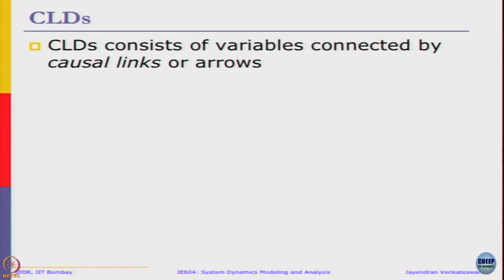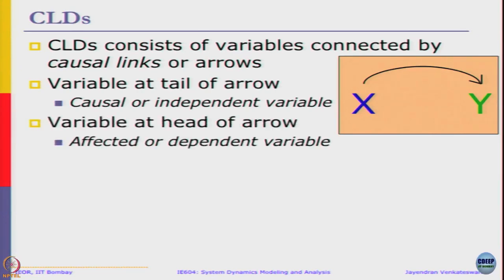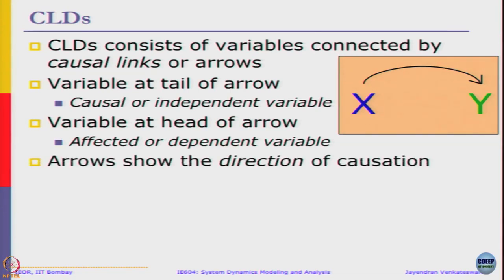CLDs, or causal loop diagrams, consist of variables connected by causal links or arrows. We have an X which is affecting Y, or X influences Y as we read it. The variable at the tail of the arrow is the independent variable X, and Y is the dependent variable. The arrows show the direction of causation.